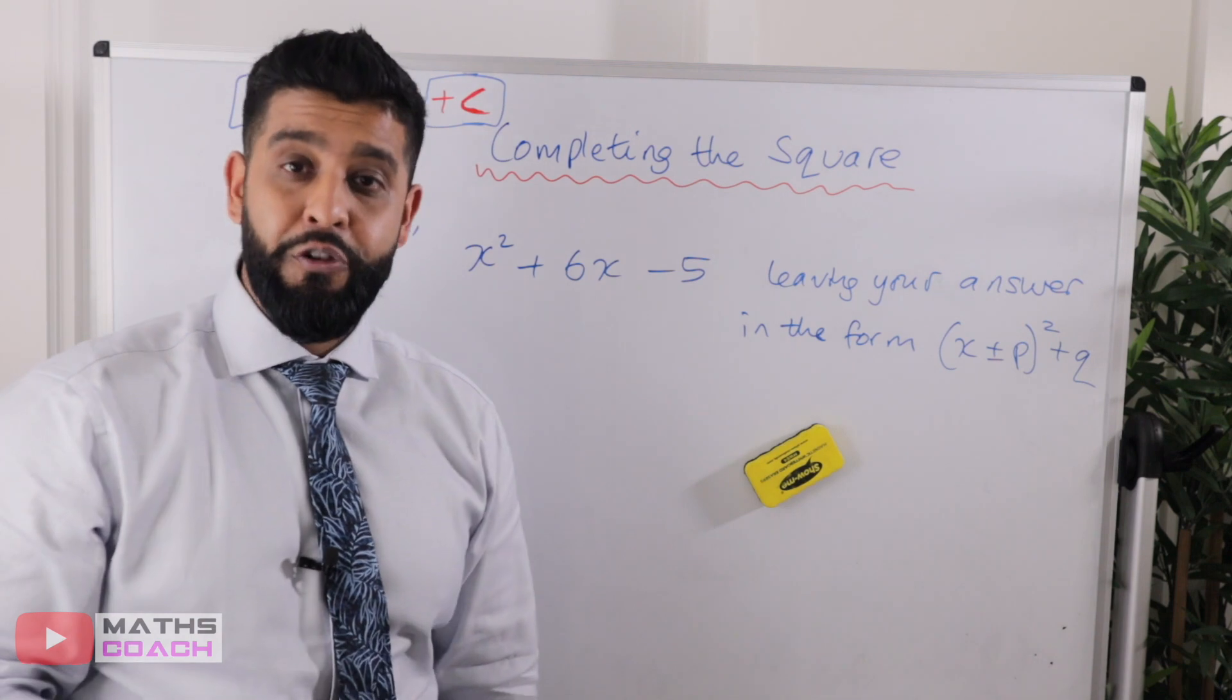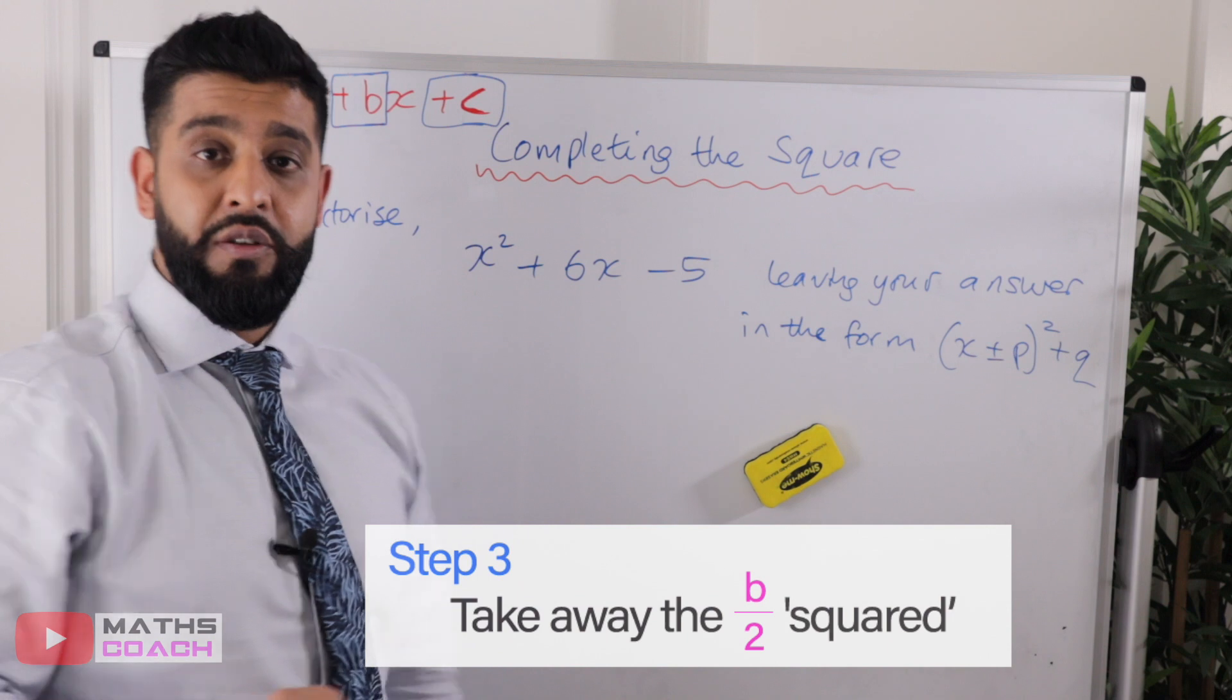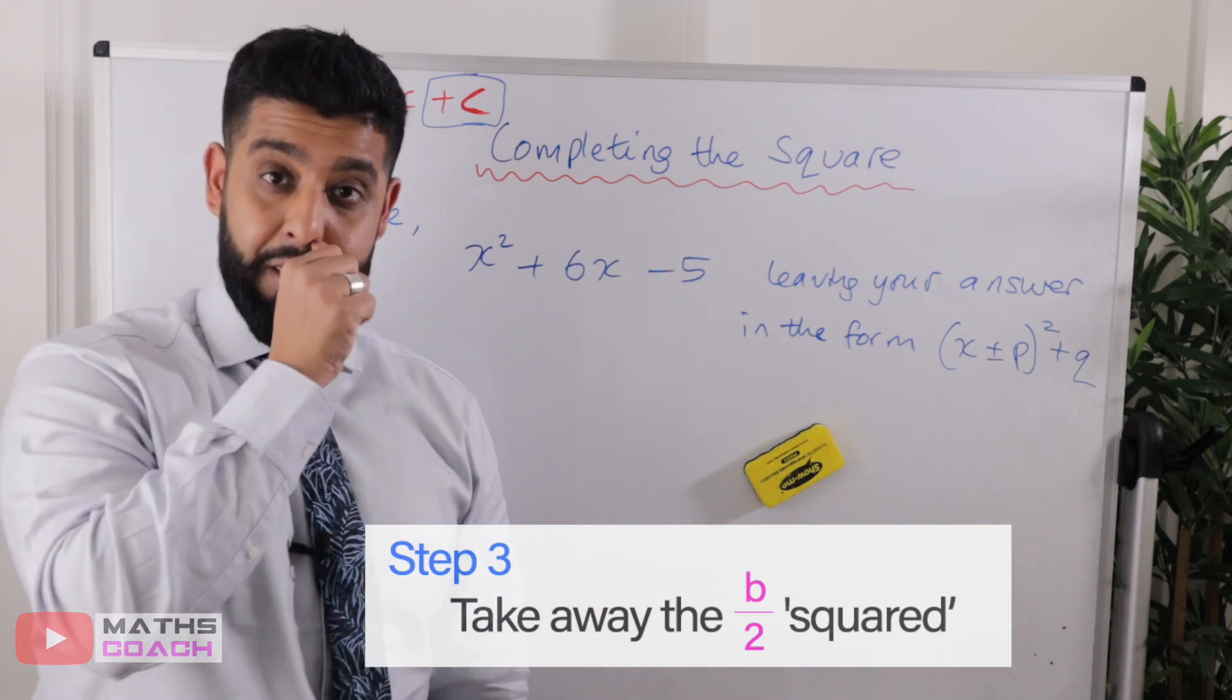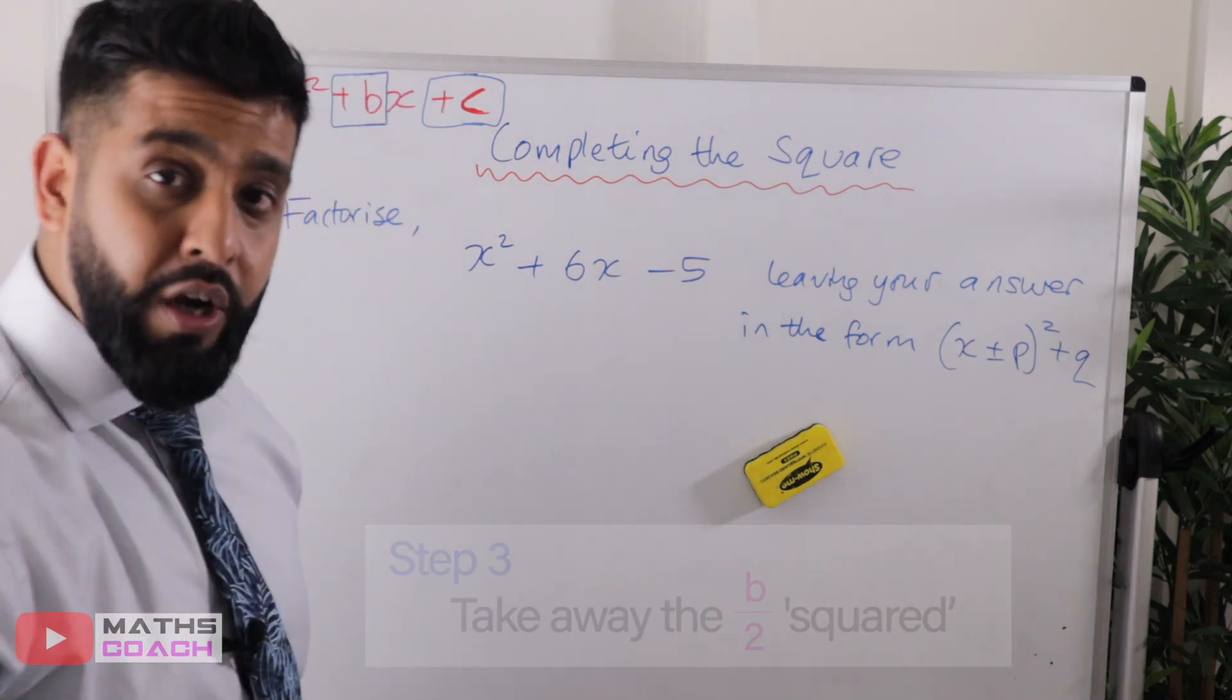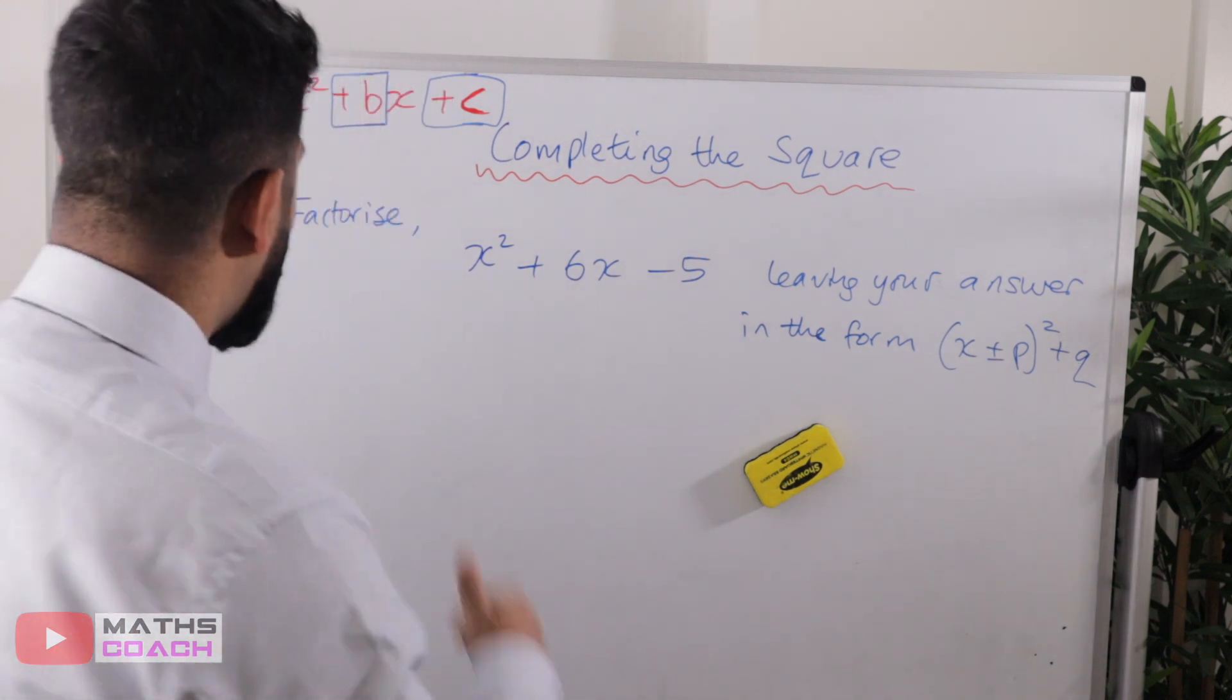And step number three, take away the squared of whatever value you obtained by dividing the b by two. But I'll show you this through example. The best way of learning is to do examples. So let's begin.